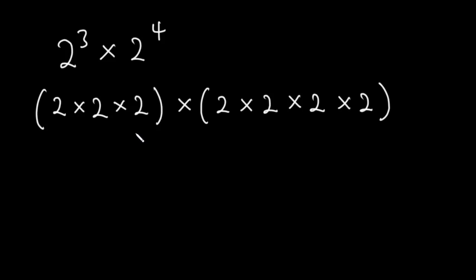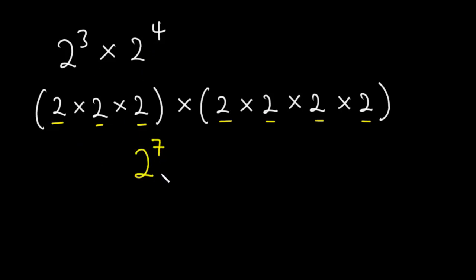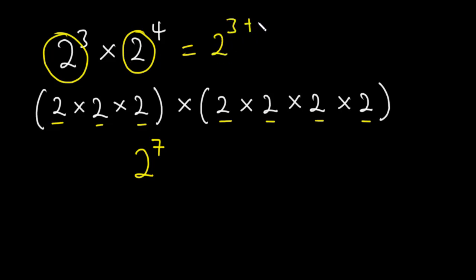How many 2's do we have? Let's count: 1, 2, 3, 4, 5, 6, 7. So we have seven 2's. Therefore, 2 exponent 3 times 2 exponent 4 is 2 exponent 7. What this basically means is that if you want to multiply common bases, you add the exponents. So 2 exponent 3 times 2 exponent 4 is 2 exponent 3 plus 4, which equals 2 exponent 7, or 128.